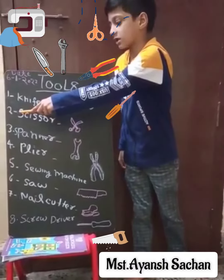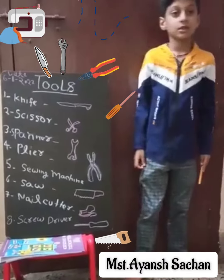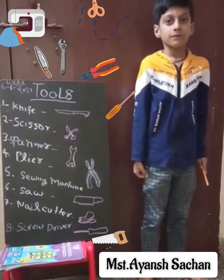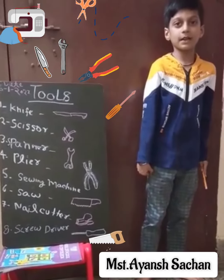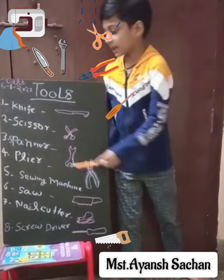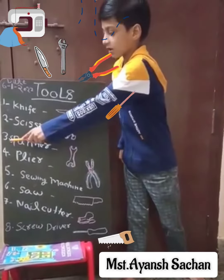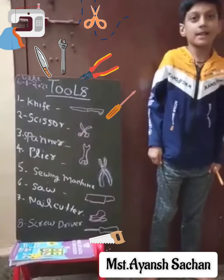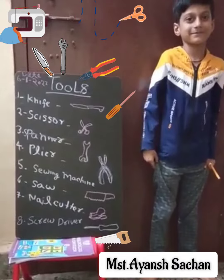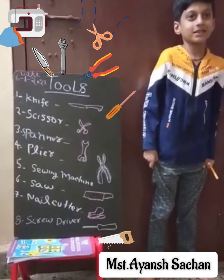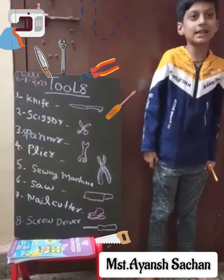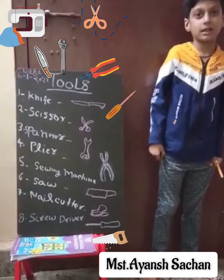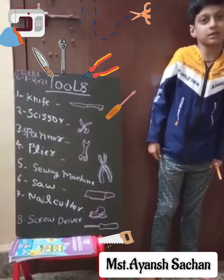Next is scissors. Scissors used for cutting paper and cloths. Next is spanner. Spanner used for tightening and loosening nuts and bolts.